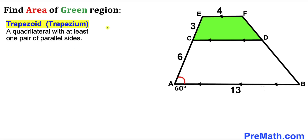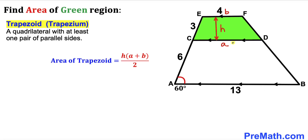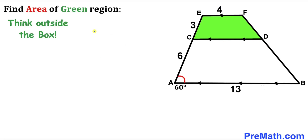Let's recall the definition of a trapezoid — sometimes called a trapezium — a quadrilateral with at least one pair of parallel sides. The green shaded region is a trapezoid since side CD is parallel to side EF. The area formula is: Area = h × (a + b) / 2. We need to find side a, height h, and we already know b = 4.